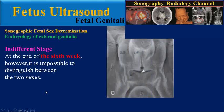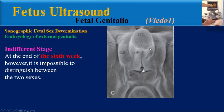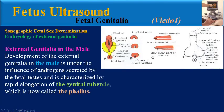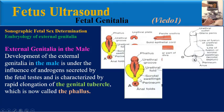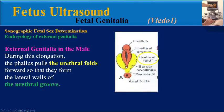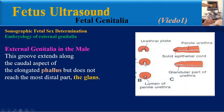At the end of six weeks, it is impossible to distinguish between the two sexes. This scanning electron micrograph of external genitalia of a human embryo at seven weeks of gestation shows the anal fold and anal opening, genital swellings, urethral folds, and genital tubercle. Development of external genitalia in the male is under the influence of androgens secreted by the fetal testis, characterized by rapid elongation of the genital tubercle, now called the phallus. During this elongation, the phallus pulls the urethral folds forward so they form the lateral walls of the urethral groove, which extends along the caudal aspect of the phallus but does not reach the most distal part, the glans.